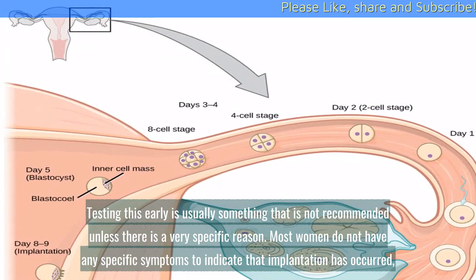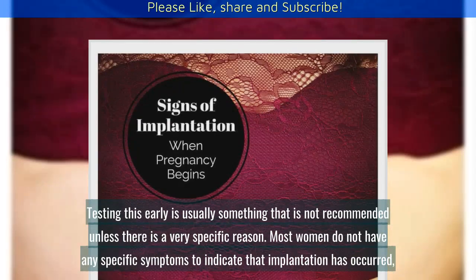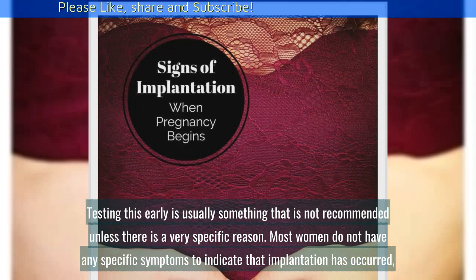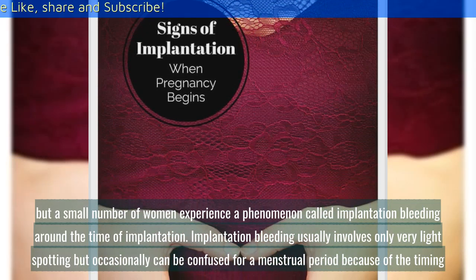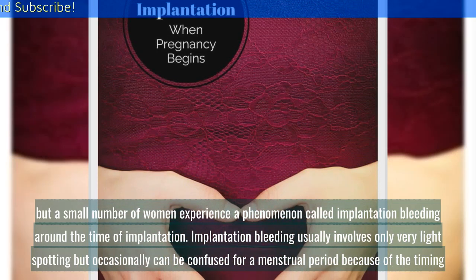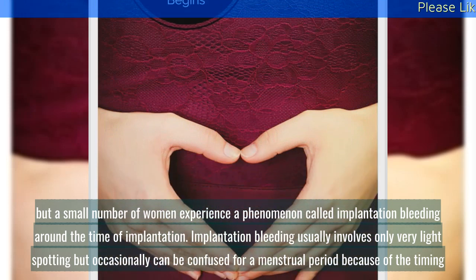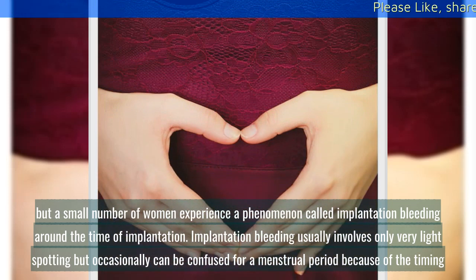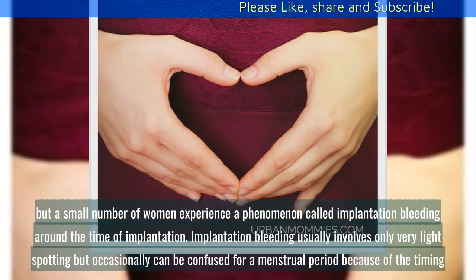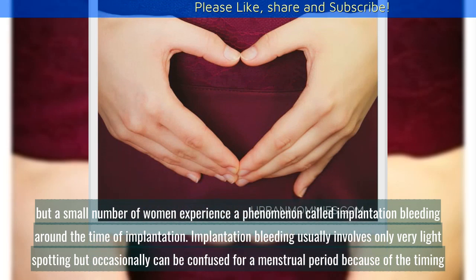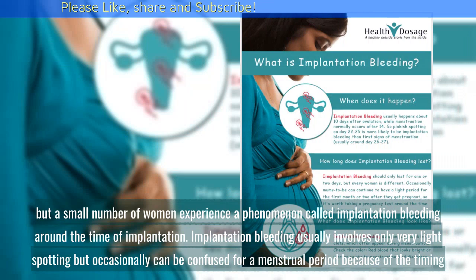Most women do not have any specific symptoms to indicate that implantation has occurred, but a small number of women experience a phenomenon called implantation bleeding around the time of implantation. Implantation bleeding usually involves only very light spotting, but occasionally can be confused for a menstrual period because of the timing.